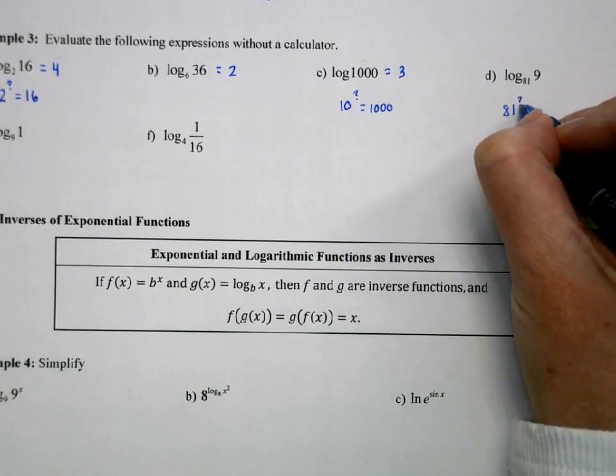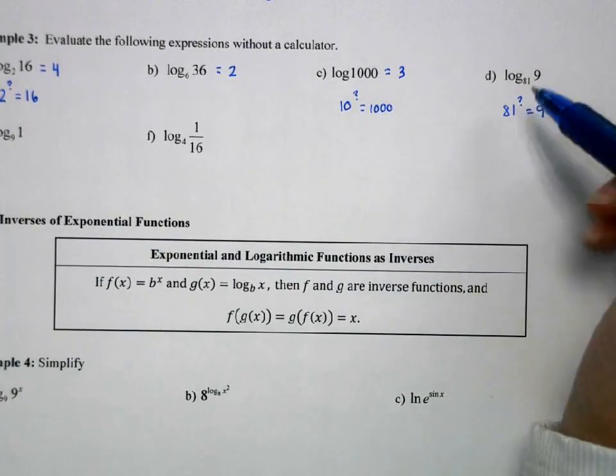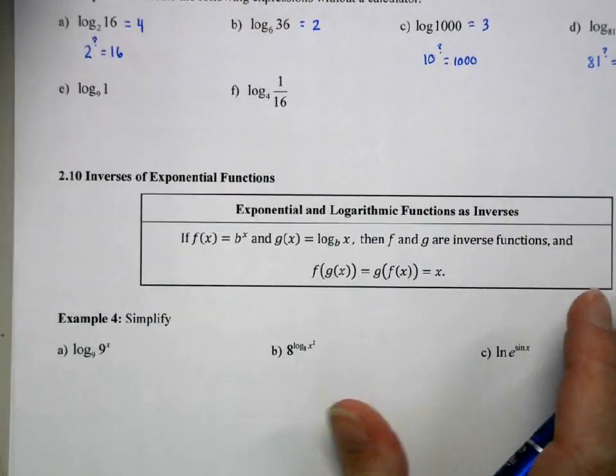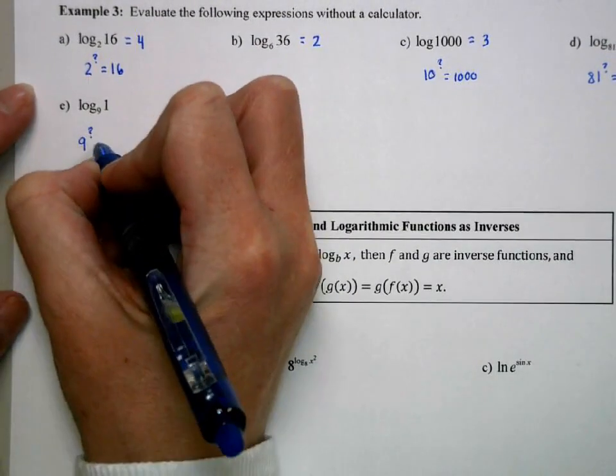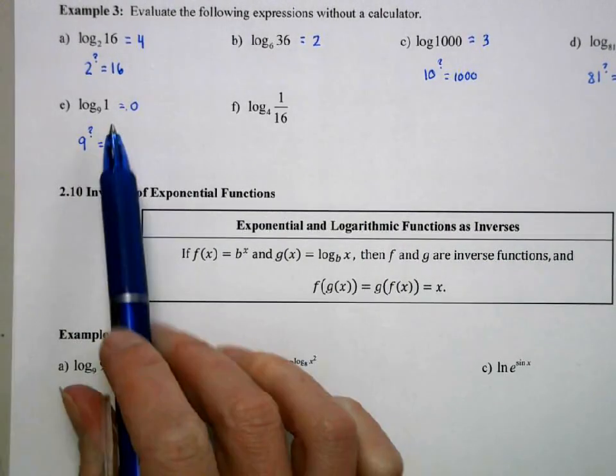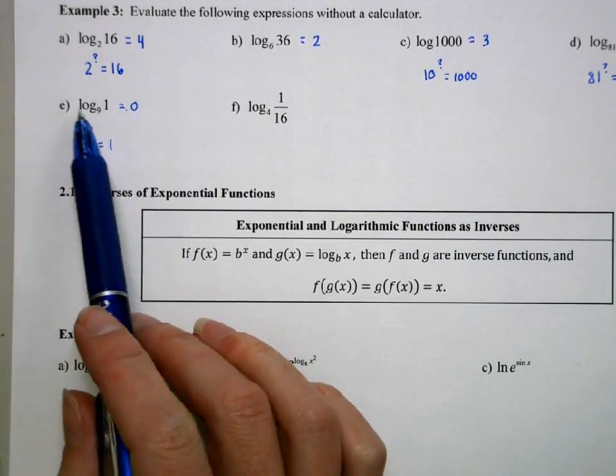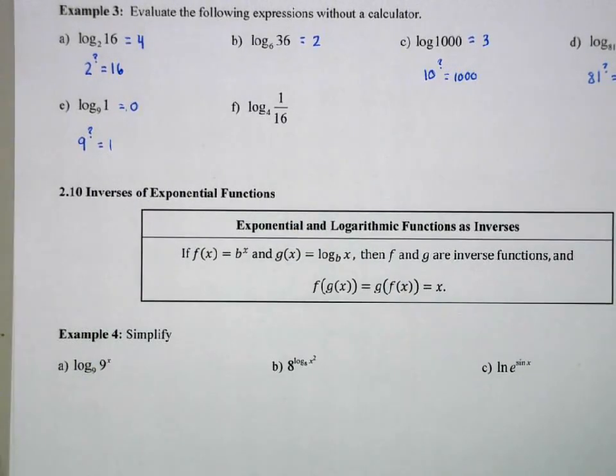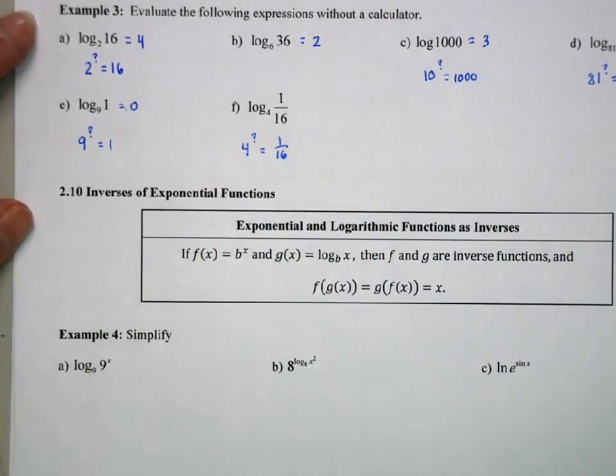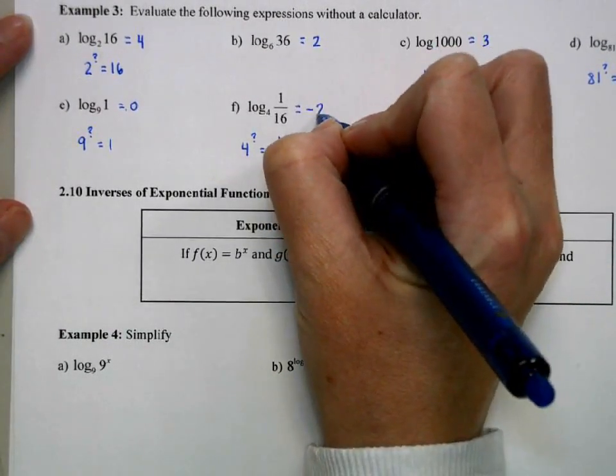81 to some power gives me 9. Well we know the square root of 81 is 9, and square root as an exponent is to the 1 half power. Log base 9 of 1. So 9 to what power is 1? Well, 0 is the power that will make that happen. And any base, that's always going to be a 0. So if it's log base 10 of 1, log base 1,000,000 of 1, we're always going to get 0. And our last one here, 4 to what power is 1 over 16? Well we know 4 squared is 16. To get it in the denominator, we make that exponent a negative.